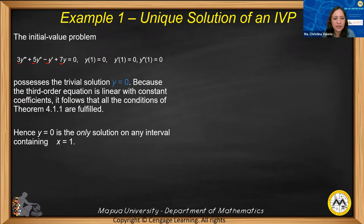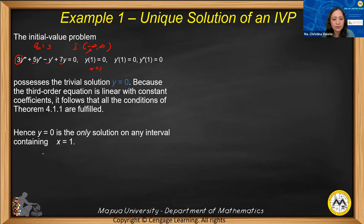Hence y = 0 is the only solution on any interval containing x = 1. The solution is unique and exists because the coefficients of y and its derivatives are continuous, a_n is not equal to zero, and the interval is all real numbers, which contains the initial point x = 1.